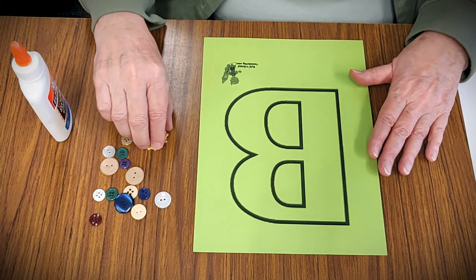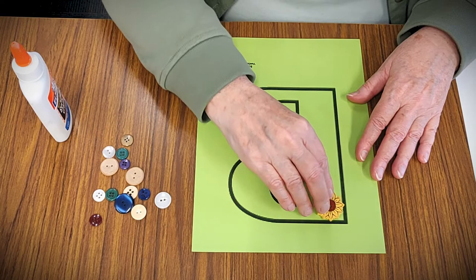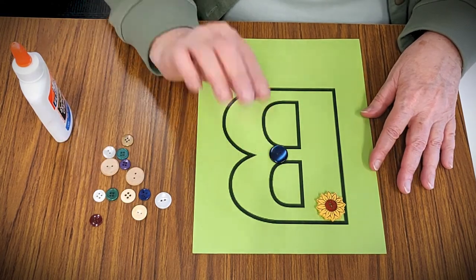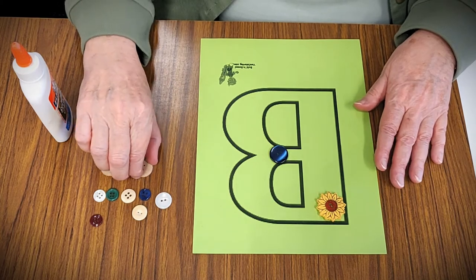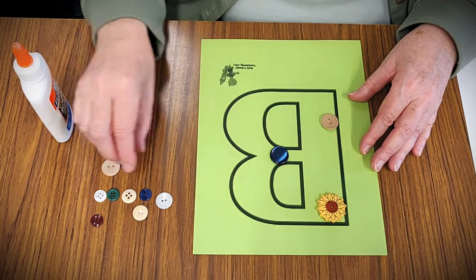Now the first step is to actually figure out your design. So that's what I'm going to do here first. I'm going to take my buttons and I'm going to figure out a design that I like before I glue anything on, and that way if I want to make a change I can do that before I have the glue on the page.